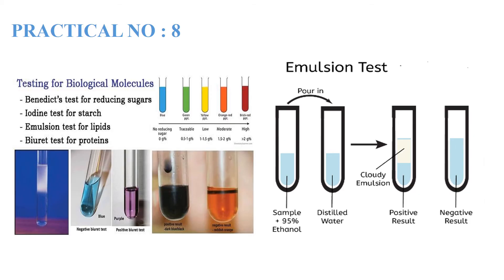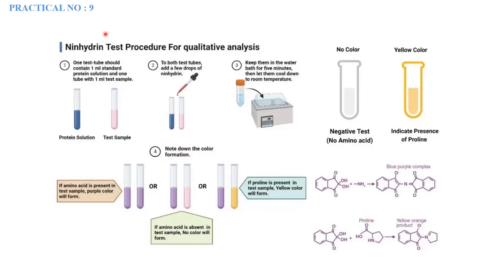Practical number nine is about the ninhydrin test, which is used for the qualitative analysis of amino acids. The procedure uses two test tubes: one with 1 ml of standard protein solution (positive control) and one with 1 ml of the test sample (experimental group). To both test tubes, add ninhydrin solution, then place them in a water bath for five minutes.